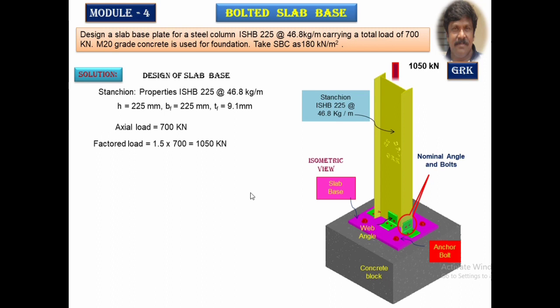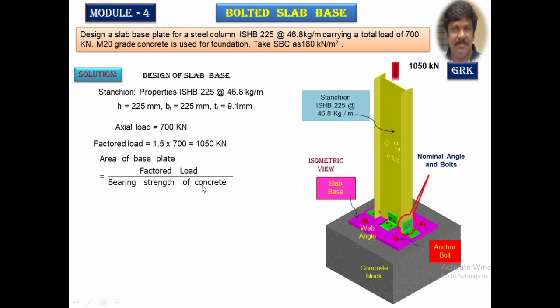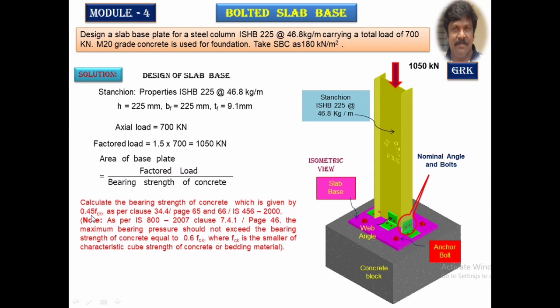That means nominally provided bolts are used, which we are not going to design. The area of the base plate is obtained by the formula: factored load divided by bearing strength of the concrete. The bearing strength depends on the grade of concrete. As per IS 456, clause 34.4 (pages 65–66), it is given as 0.45×fck. IS 800 gives 0.6×fck as the permissible limit of bearing stress.